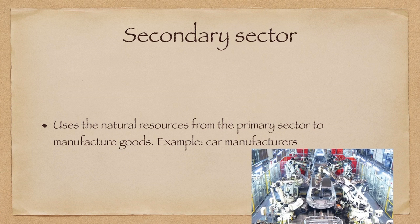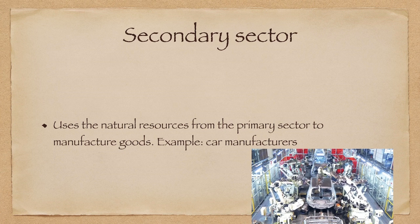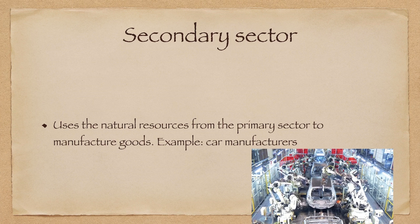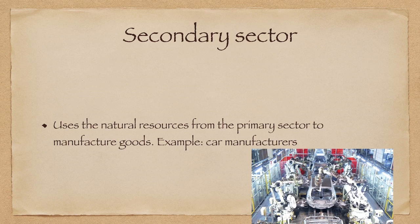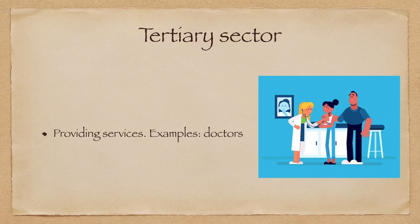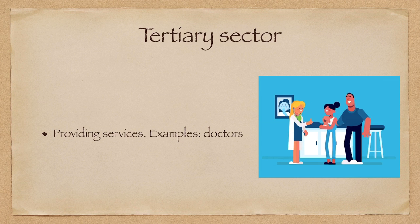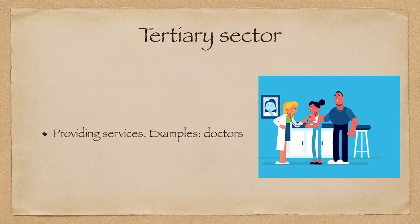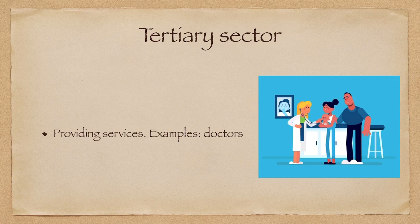The secondary sector uses natural resources from the primary sector to manufacture goods. Examples are car manufacturers and other factories. The tertiary sector provides services to consumers and to other sectors. Examples include doctors, travel agents, and insurance agencies.